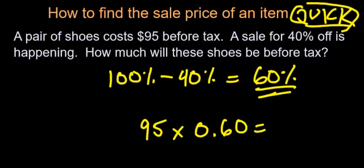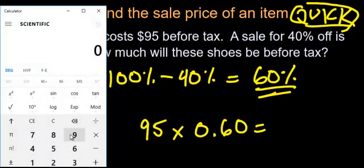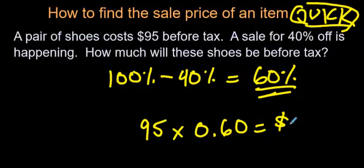And if you do that, it will give you the same answer that we just got before. So 95 times 0.6, you're going to get $57 as your price for those shoes.